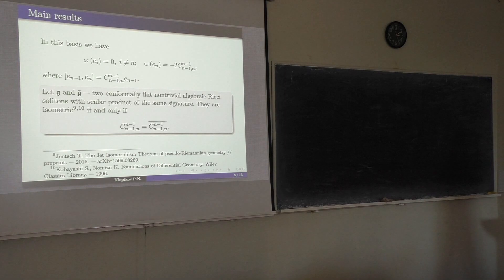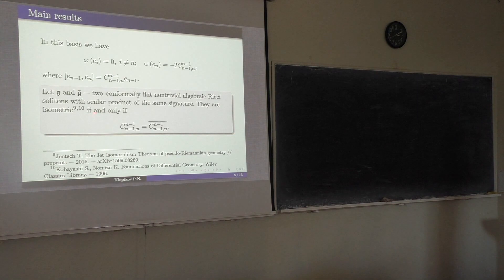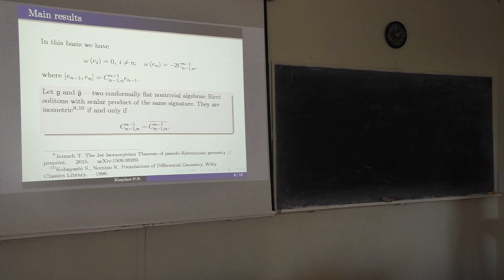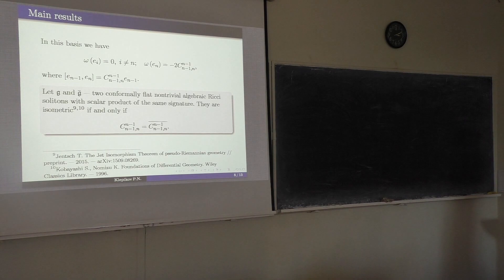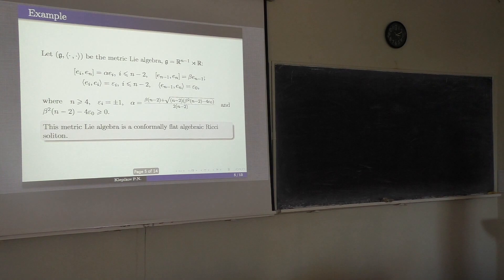This shows that all covariant derivatives of the Ricci tensor, and also the Weyl tensor since our Lie algebra is conformally flat, are expressed only through this structure constant. So if we take two conformally flat non-trivial algebraic Ricci solitons, they are isometric if and only if this structure constant in some basis are equal. From papers 9 and 10, metric Lie algebras are isometric if and only if the corresponding connected and simply connected metric Lie groups are isometric as pseudo-Riemannian manifolds. This means that prescribing this constant and the signature epsilon_i gives us exactly one non-trivial conformally flat algebraic Ricci soliton up to isometry — and if the inequality holds, it is isometric to our example.